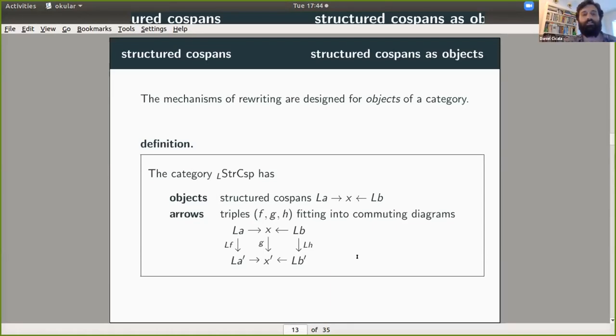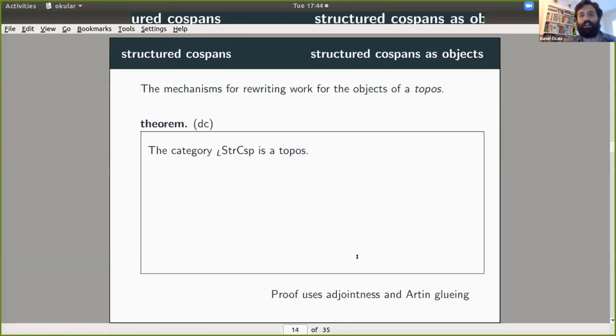Now, the mechanisms of rewriting are designed for objects of any old category, but specifically for a topos. Actually, if I'm being honest, really adhesive category, but again, I'm restricting my attention to topoi. And so this category turns out is in fact a topos. And so this allows us to think about rewriting structured cospans.